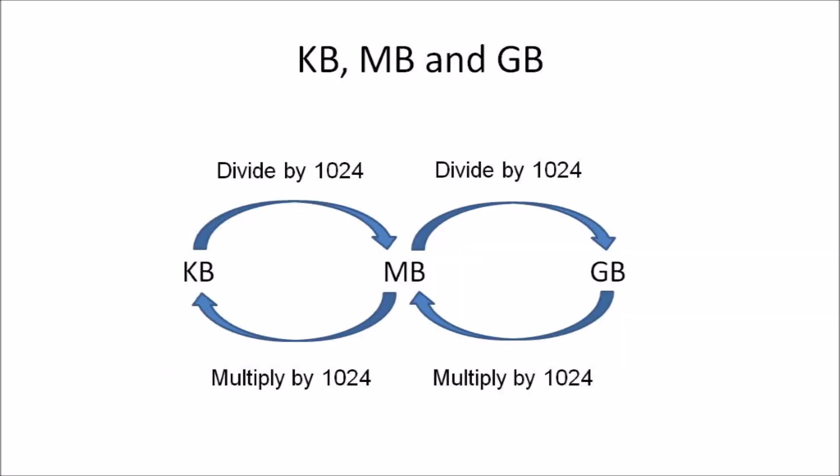In conclusion: to convert kilobytes to megabytes, divide by 1024; to convert megabytes to gigabytes, divide by 1024. To convert gigabytes to megabytes, multiply by 1024; to convert megabytes to kilobytes, multiply by 1024. For kilobytes to gigabytes or gigabytes to kilobytes, apply the 1024 conversion twice in sequence.